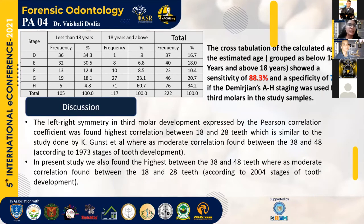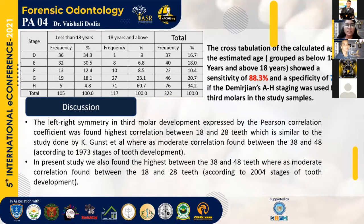The table shows D-to-H stage frequency distribution for individuals below 18 years and above 18 years. In the discussion, right and left symmetry in third molar development, expressed by Pearson correlation coefficient, showed the highest correlation between teeth 18 and 28, similar to the study by K. Gunst et al., whereas moderate correlation was found between teeth 38 and 48, according to the 1973 developmental stages.